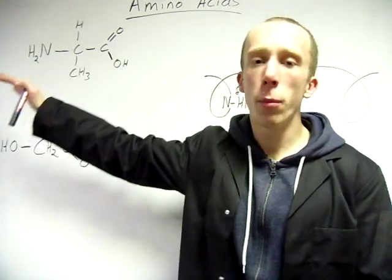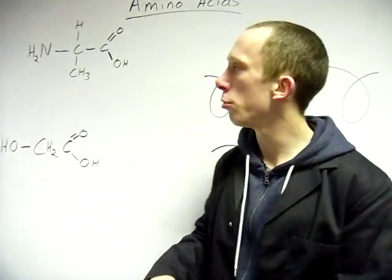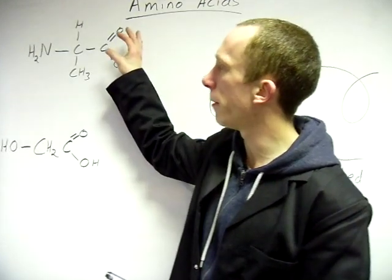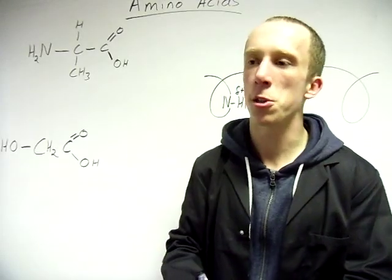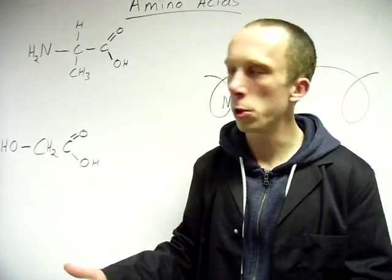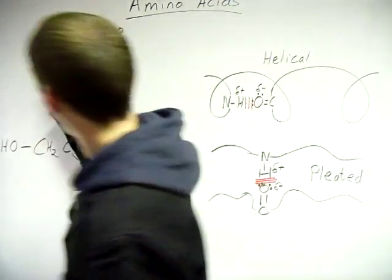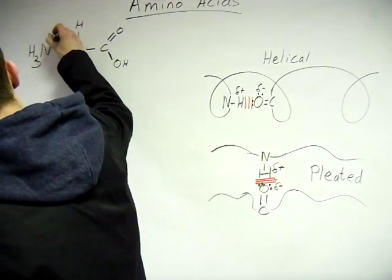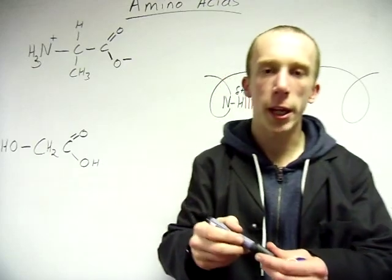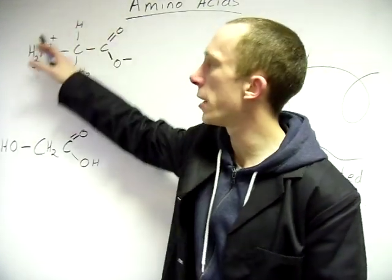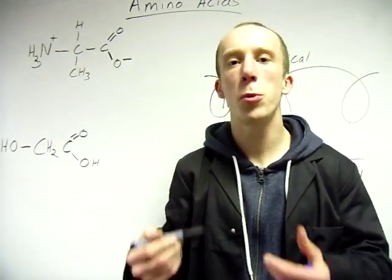Now it doesn't normally exist like that, even in neutral conditions. Because of the fact that it's got both an acidic end and a basic end, it interacts with itself to actually use those properties. So how it normally exists in a neutral pH is like that. It's what's called a zwitterion.